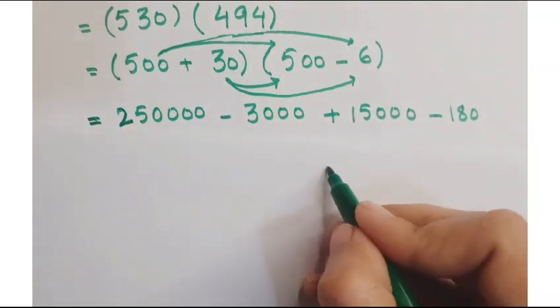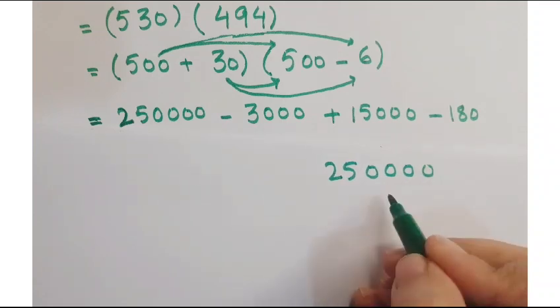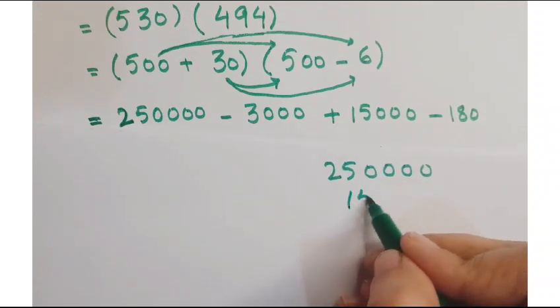Now first of all, add 250,000 with 15,000.